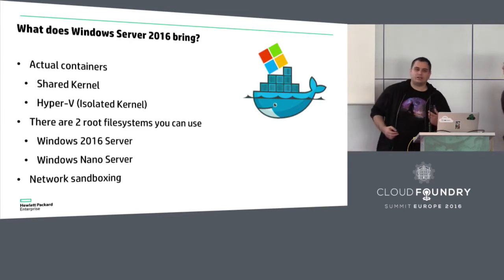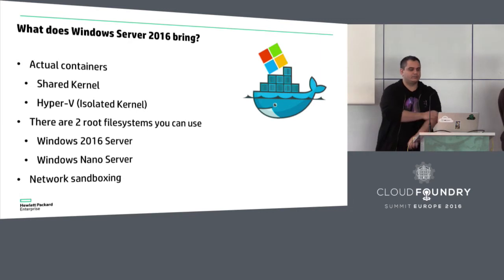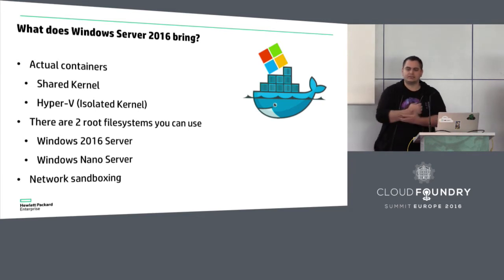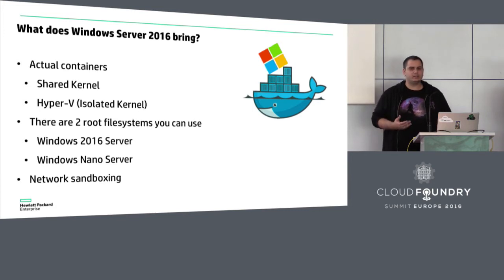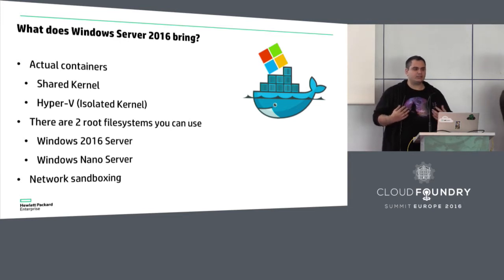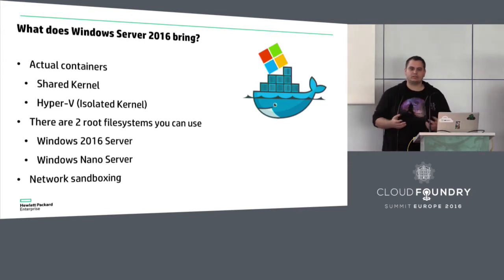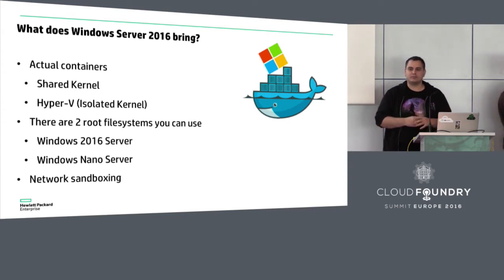As you just saw, there is a lot of duct tape involved in the current implementation for Windows on Cloud Foundry — basically, there are no real containers. So what does Windows Server 2016 bring? Actual containers with native support. We have Hyper-V containers, which are isolated kernels — those are containers that are actually lightweight VMs. But we also have shared kernel containers, and those are the kind we care about and will be focusing on in this talk.